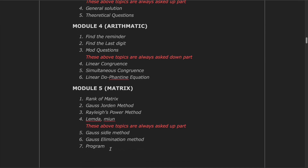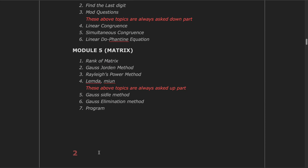Model 4 is all about arithmetic. The first question is find the remainder, find the last digit, and mod questions. The second question covers linear congruence, simultaneous congruence, and linear Diophantine equations. Model 5 is all about matrix and is the scoring module. The first question is rank of matrix, second is Gauss-Jordan method, third is Rayleigh power method, fourth is finding lambda and mu value, fifth is Gauss-Seidel, sixth is Gauss elimination, and the last is program.